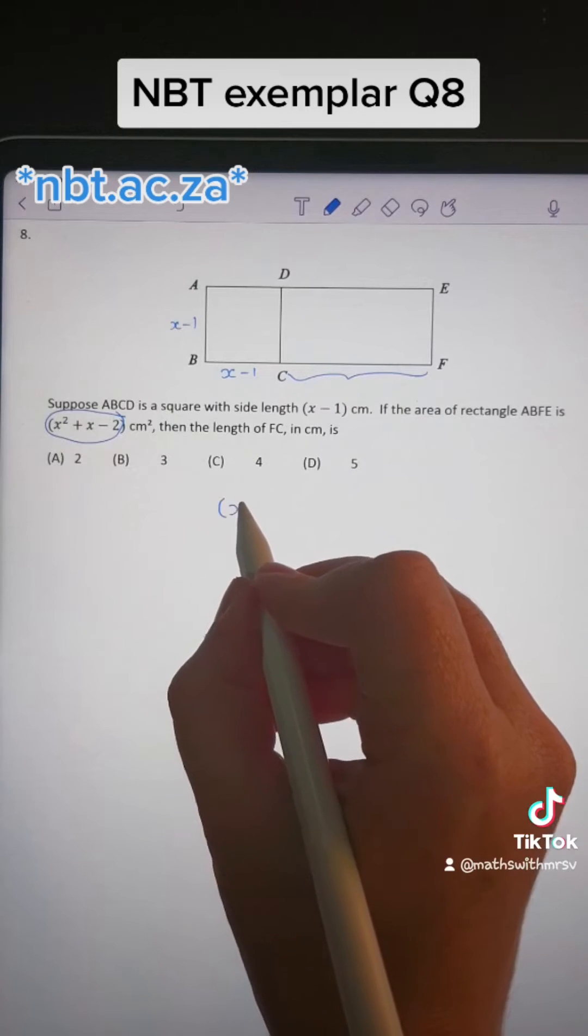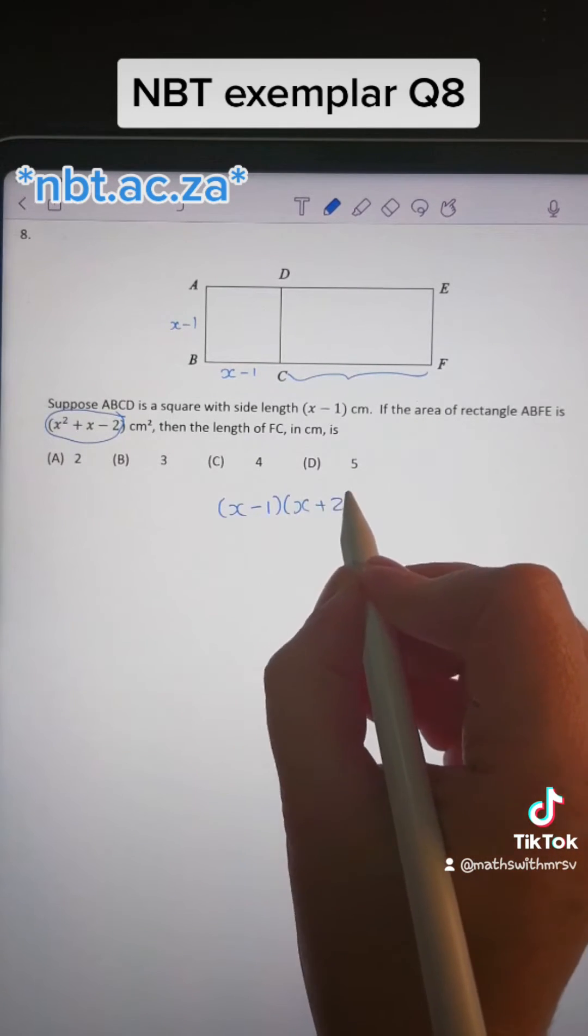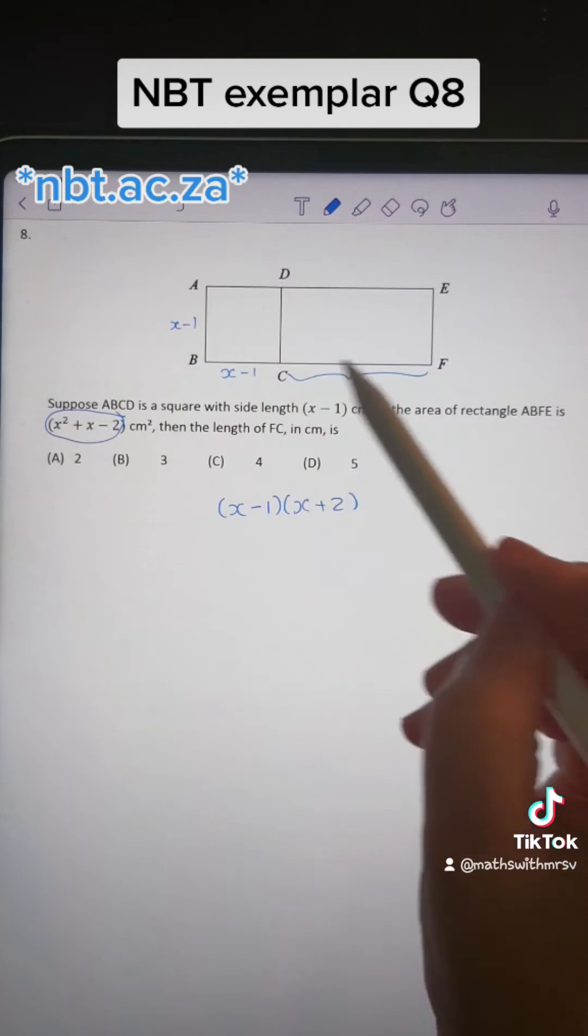In other words, we can factorize this. It's going to be x minus 1, x plus 2. You can see that this x minus 1 and that x minus 1 is the breadth of this rectangle.